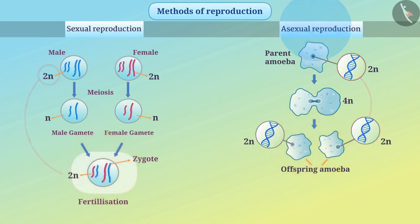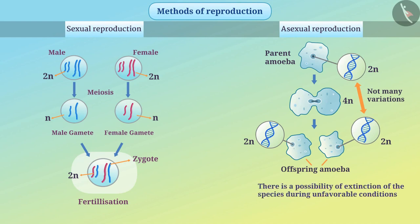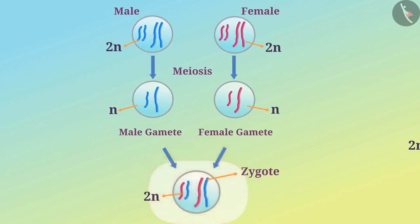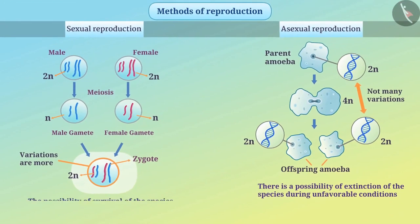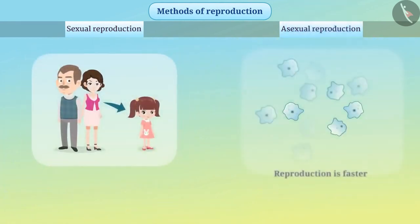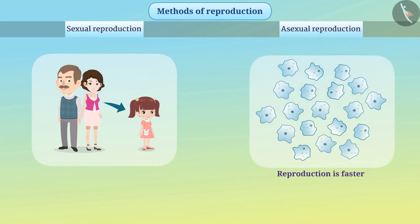In asexual reproduction, offspring is formed from a single individual, and therefore there are not many variations in the DNA. Due to this, there is a possibility of extinction of the species during unfavorable conditions. In sexual reproduction, the DNA of offspring is produced from the combination of both parents, so variations are more, and therefore the possibility of survival of the species during unfavorable conditions is high. Asexual reproduction is faster as compared to sexual reproduction.